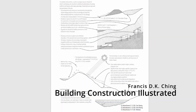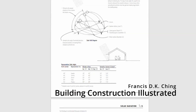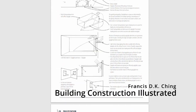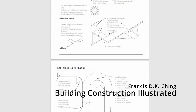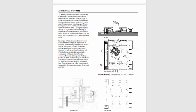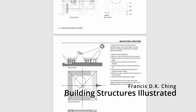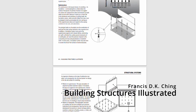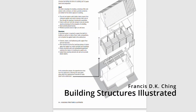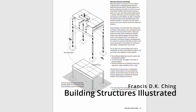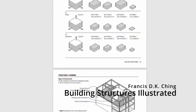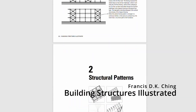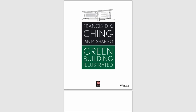Building Structures and Building Construction are two sides of the same coin — they're different, but you can't understand one without learning about the other. They both go into technical details about the construction process and structural integrity as a whole. This is what you should be learning in your construction courses, and you have to understand it in order to properly design a building, because designs are always based on the technical capabilities of materials.